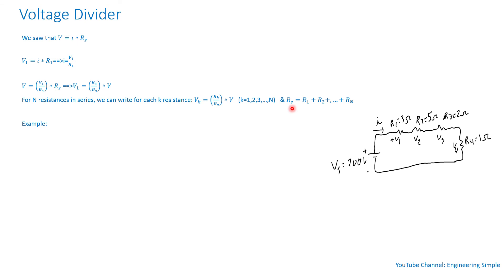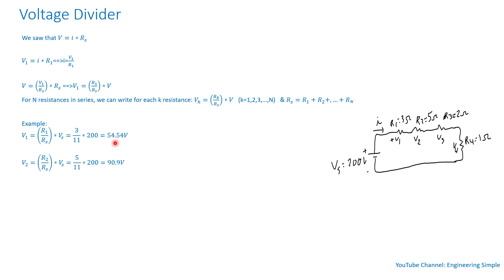Let's apply this to the previous example. V1 equals R1 divided by RS times VS. R1 is 3 ohms, the equivalent series resistance is 11 ohms, and the source voltage is 200 volts, giving 54.54 volts. Similarly, V2 is 90.9 volts, V3 is 36.36 volts, and V4 is 18.18 volts — confirming our earlier results using the voltage divider.